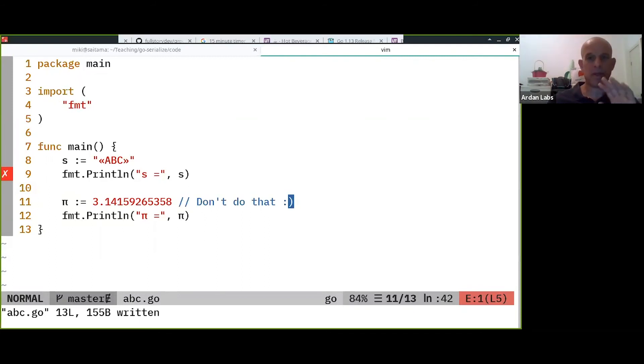Translating some mathematical formula from an article or something into code, and you'd like it to be as close as possible to the article. So what you're doing is you're using the same letters instead of writing out pi.